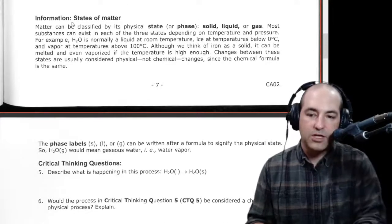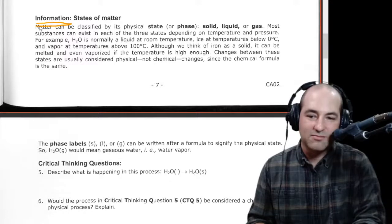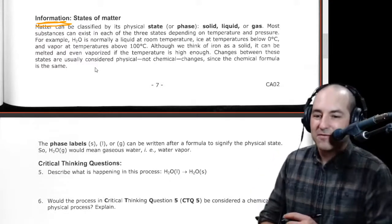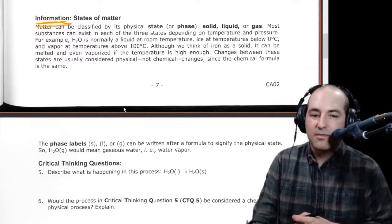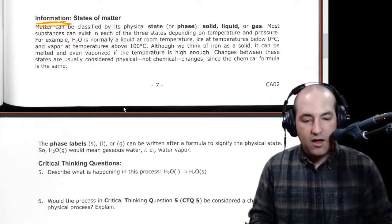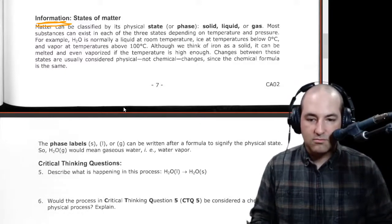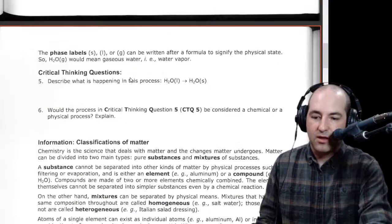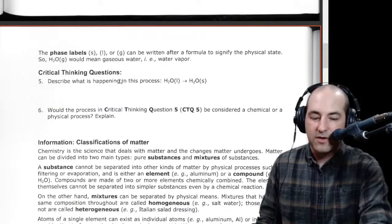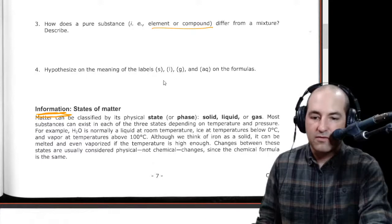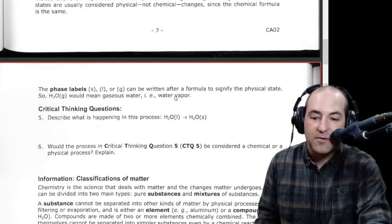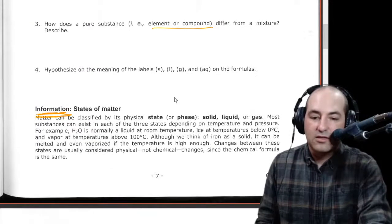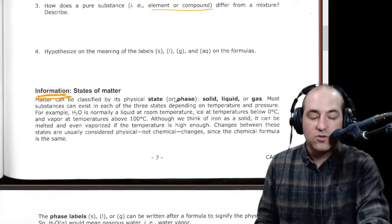So then we get a little bit of information. You're just supposed to read it. So you read the information and you see matter can be classified by its state. And it's telling you a little bit about some states of matter. And it tells you a little bit about those phase labels. Notice up here, it asked you what the meaning of the labels are. So it hypothesized on the meaning of those labels. And then down here, it just tells you what they are.